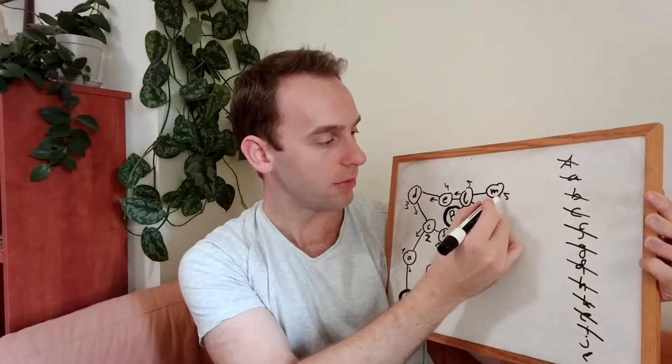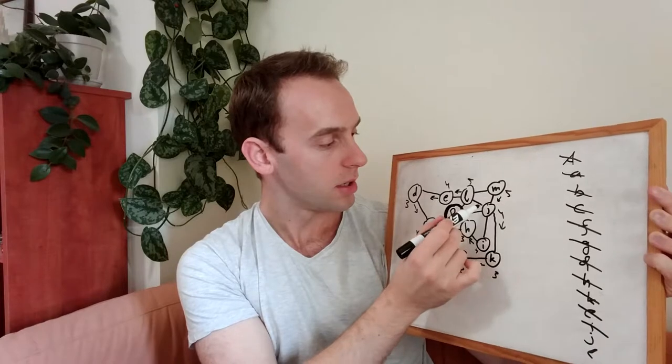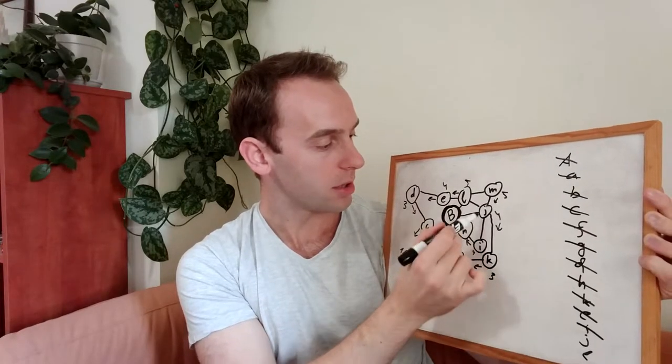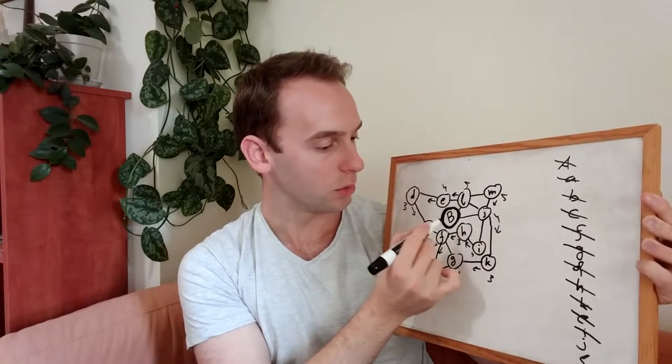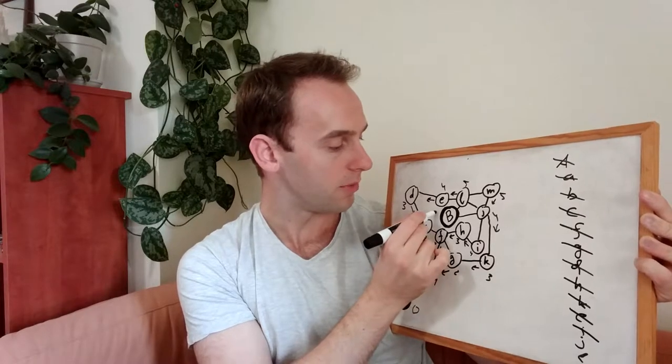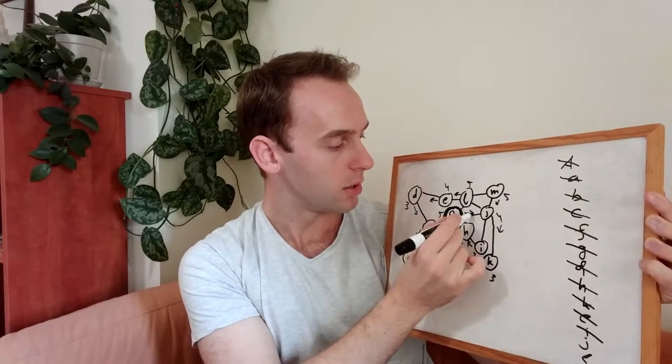And now we will take I. We will update all its neighbors. So we will update this to be five from here. This is already updated. This is already updated. And now we arrive to node B with distance of five. And we arrive from here.